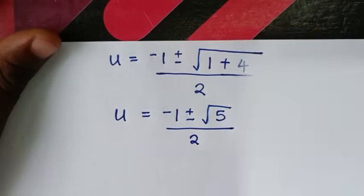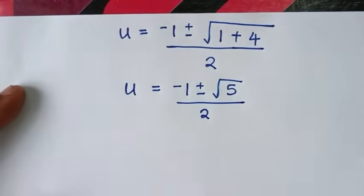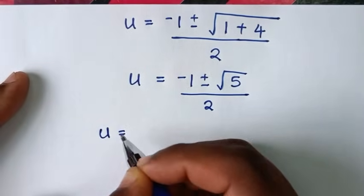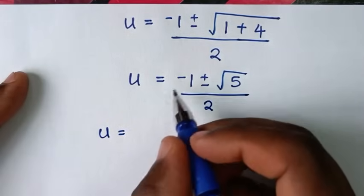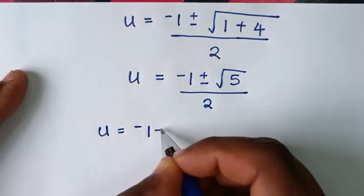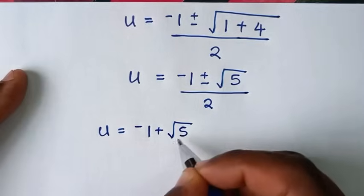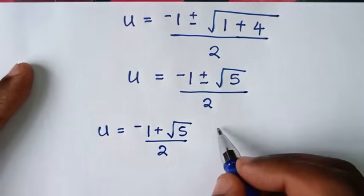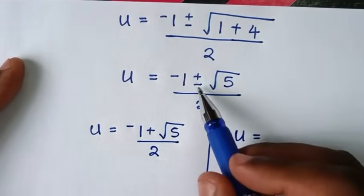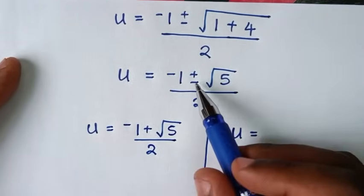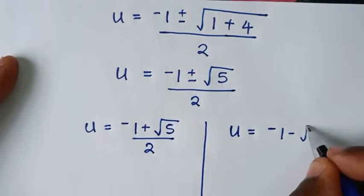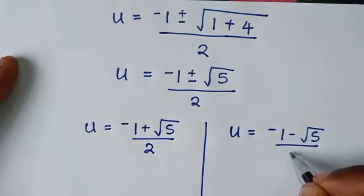From here we have two solutions. The first value is u equals negative 1 plus square root of 5, all over 2. The second value is u equals negative 1 minus square root of 5, all over 2.